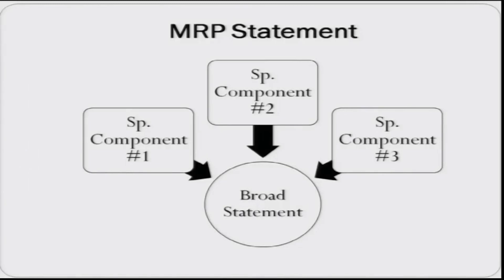Generally, there are two types of mistakes people make when creating a marketing research problem statement: they either define the problem in a very broad way or in a very narrow way. However, the marketing research problem should have two components — a broad statement that helps you understand the overall problem you are trying to address, and corresponding specific components or objectives of that problem that you need to resolve. By answering those specific components, you can answer the broad statement.